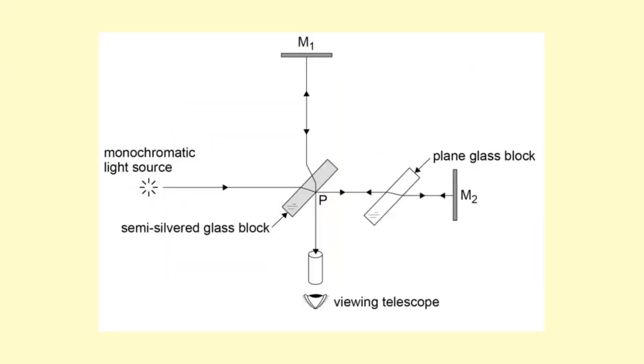How do we actually detect the absolute motion of the Earth through the ether? Let's assume that the Earth is traveling in this direction through the ether, and therefore the setup is also moving in that direction. From the last video, the beams that travel parallel to the direction of the Earth take longer to arrive back at the viewing telescope compared to the rays that travel perpendicular to the path of the Earth.